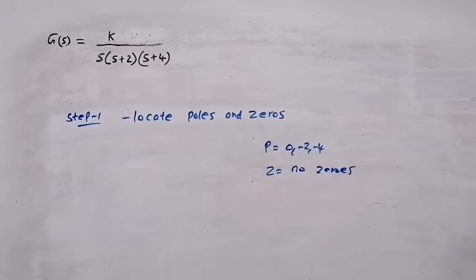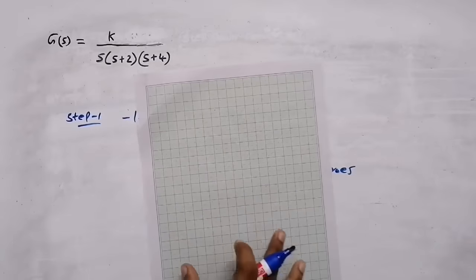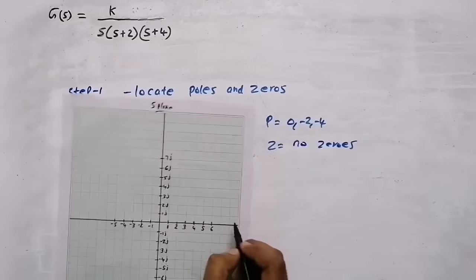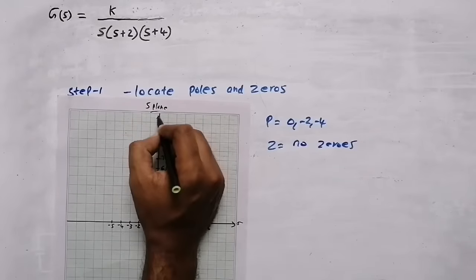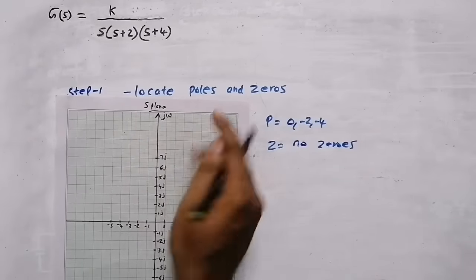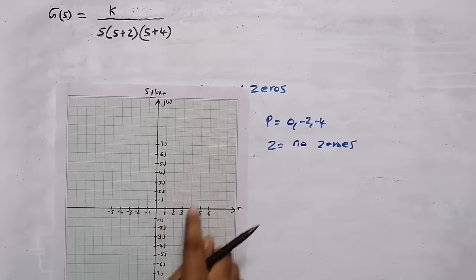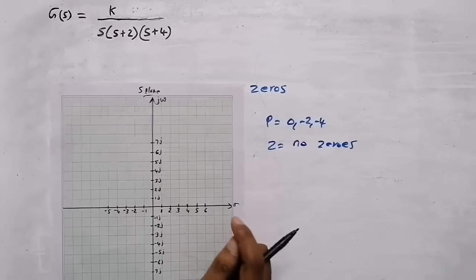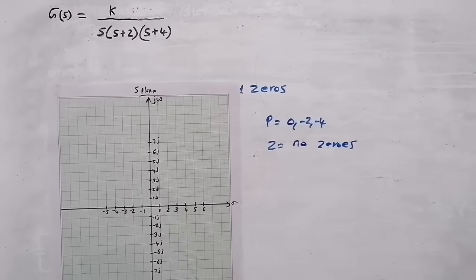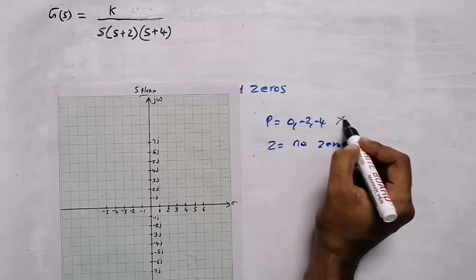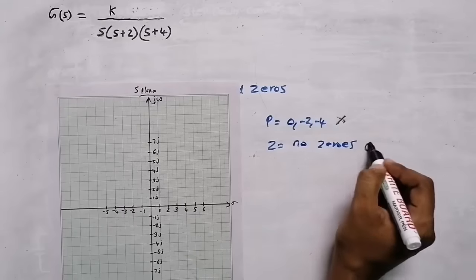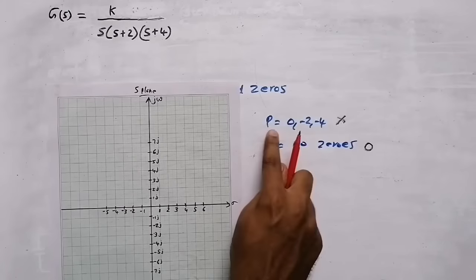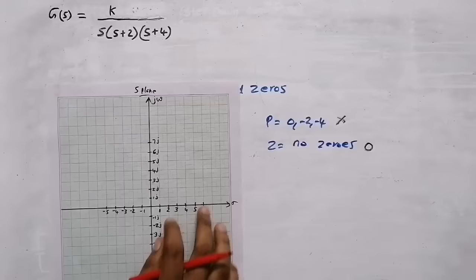Now we need to plot this on a graph sheet. This is the s-plane. The x-axis is sigma and the y-axis is jω. The scale is: x-axis, one centimeter equals one unit; y-axis, one centimeter equals one unit. For plotting poles we use a cross mark, and for zeros we use a circle. Now I'm going to plot the poles, which are at 0, -2, and -4.